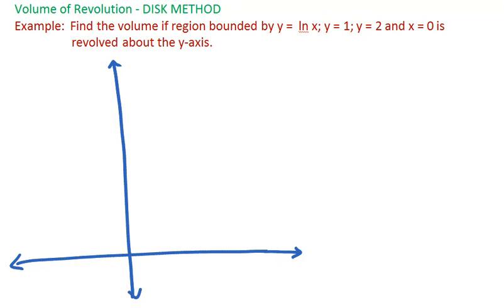Our goal is to have another example of the disk method for a volume of revolution. Let's look at our boundaries. First, we need the graph of y equals natural log of x, one of our common functions, bounded by two horizontal lines at y equals 1 and y equals 2.